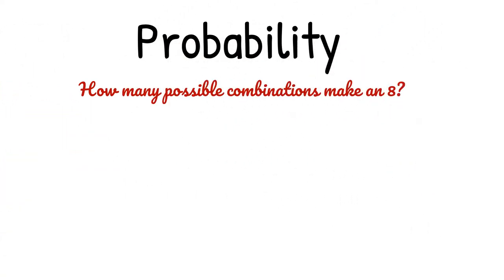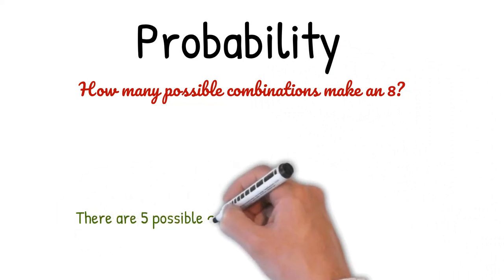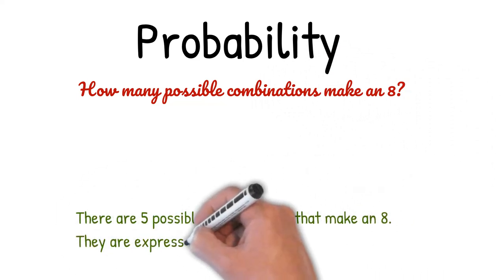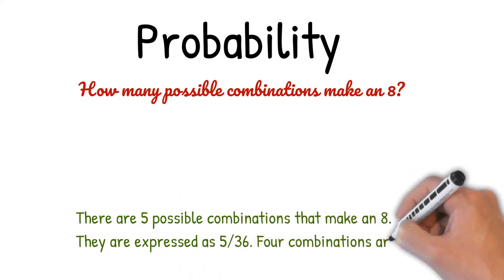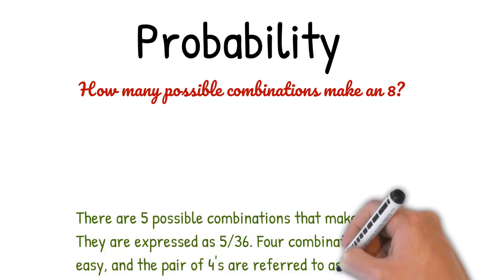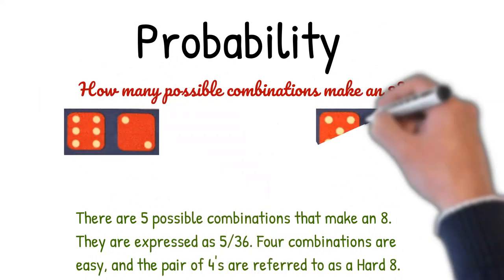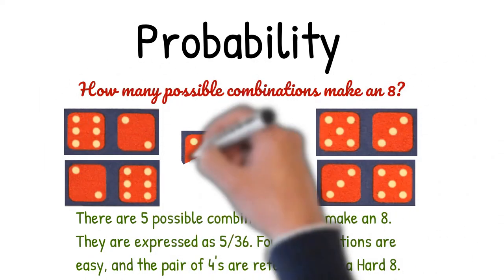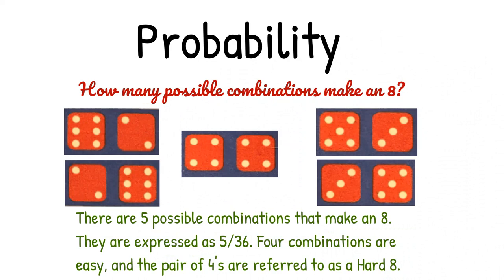How many possible combinations make an eight? There are five possible combinations that make an eight, expressed as five out of thirty-six. Four combinations are easy, and the pair of fours are referred to as a hard eight. The combinations are six-two, two-six, five-three, three-five, and four-four.